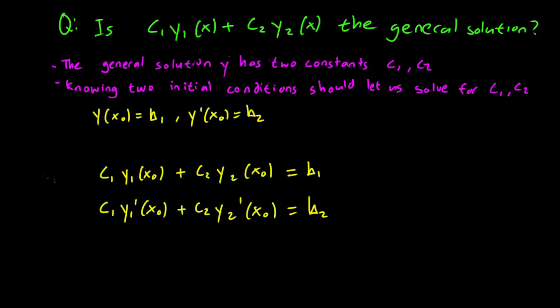And y'(x0) is equal to c1y1'(x0) plus c2y2'(x0), and the initial condition says it's equal to b2. And if this is indeed the general solution, we need to be able to solve for c1 and c2, given these initial conditions.